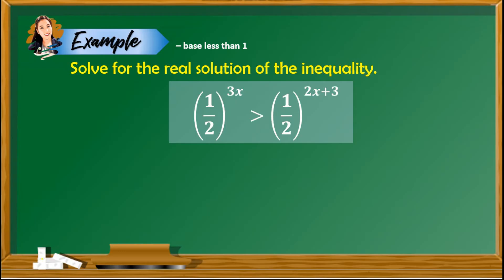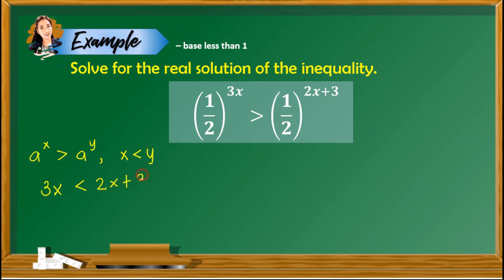Example number 3: solve for the real solution of 1 half raised to 3x is greater than 1 half raised to 2x plus 3. The bases are the same — both 1 half — and 1 half is less than 1. Based on the property where a is between 0 and 1, if a raised to x is greater than a raised to y, we change the direction of the inequality, giving x is less than y. So taking out the exponents, 3x is now less than 2x plus 3. Combining like terms, 3x minus 2x is less than 3, giving x is less than 3.